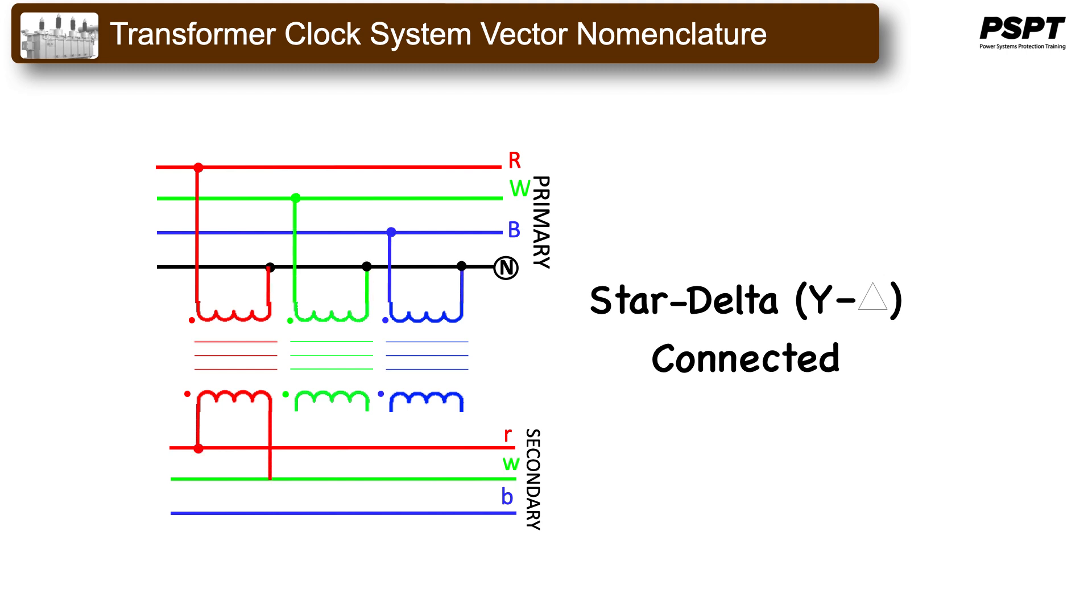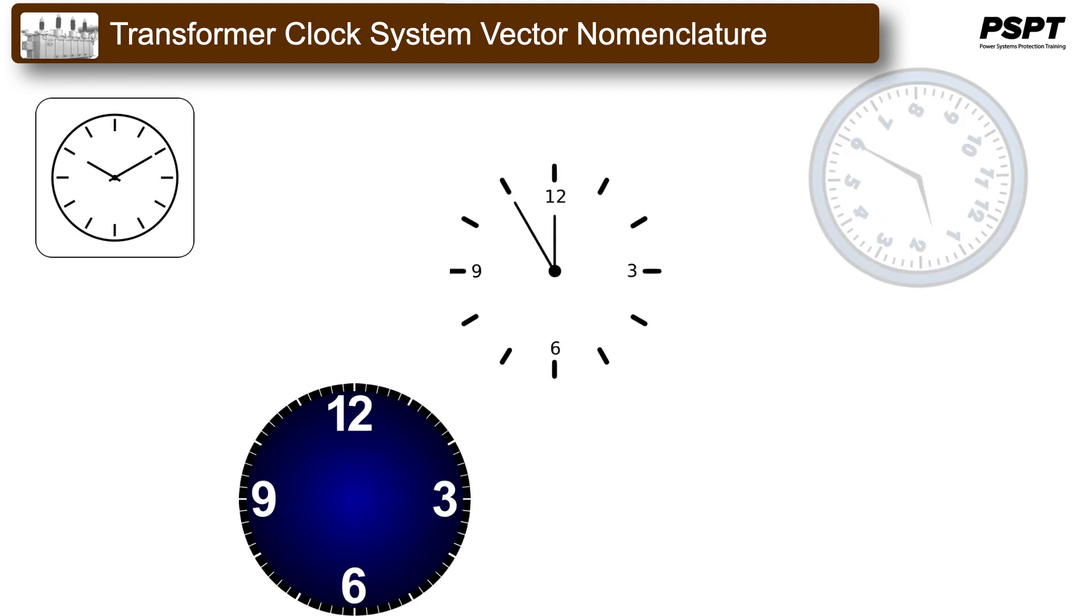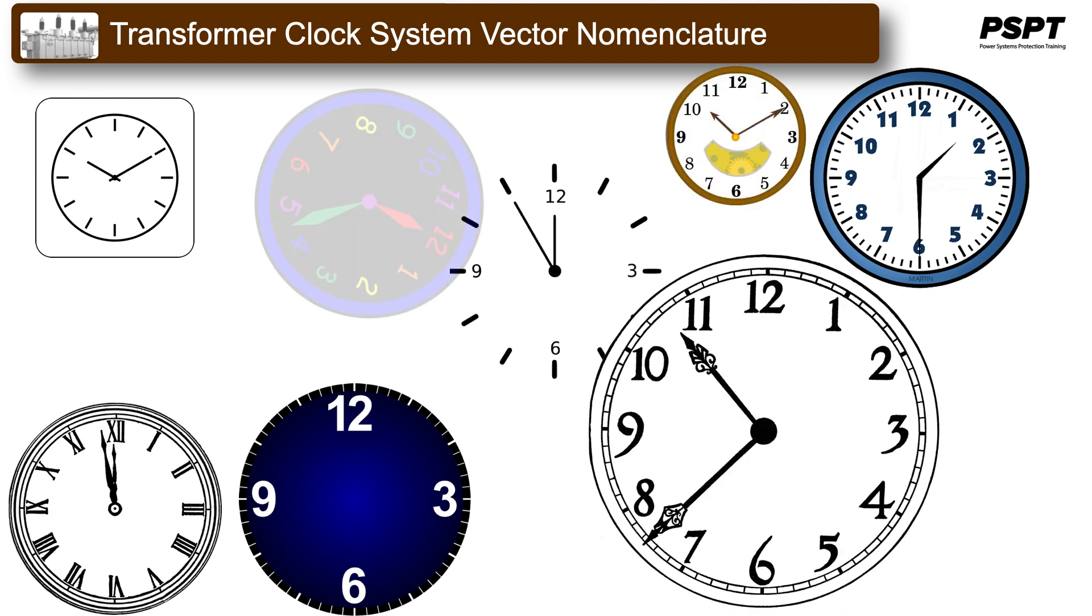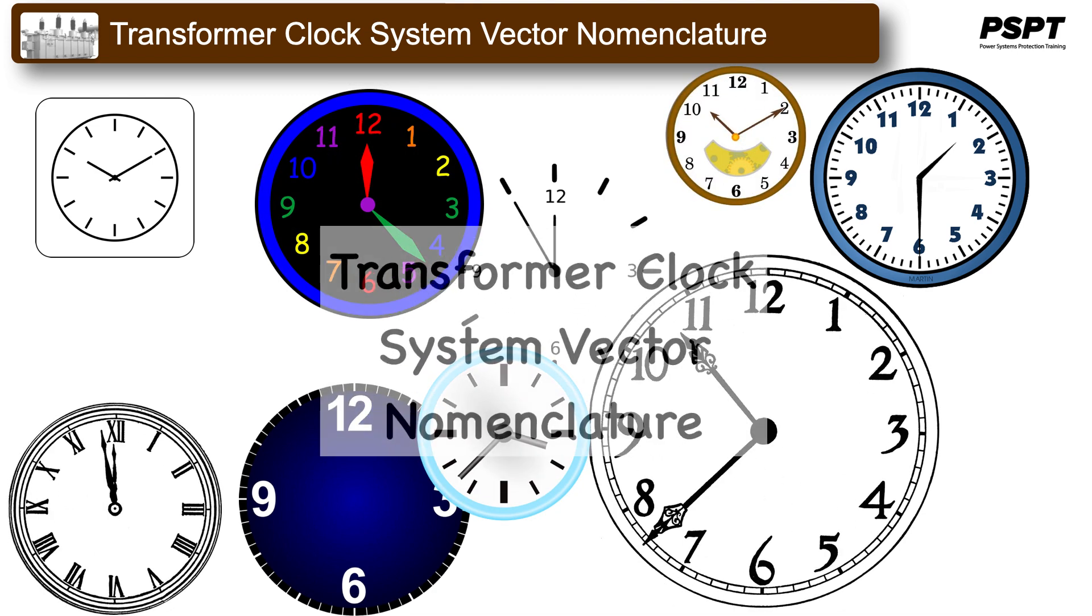Another example would be this star-delta-connected transformer, which we also have studied. We could have just as easily used the secondary windings connections that you see here now, and it would still be a star-delta transformer. So how do we simply convey the configuration along with the connections? The answer is transformer clock system vector nomenclature.